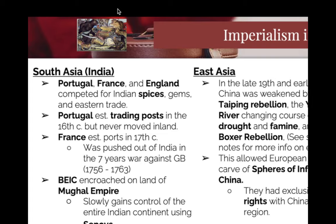Japan is our next subheading. Japan is industrialized. It needs natural resources — Japan, like England, is an island. So it begins conquering for natural resources. It is really going to focus on Korea, Southeast Asia, and the Pacific Islands.